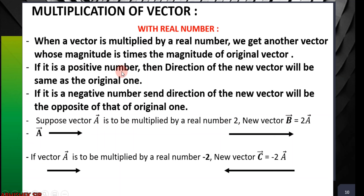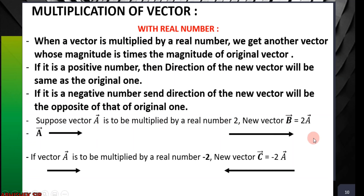If the real number is positive, the direction of the new vector will be the same as the original. If it is negative, the direction will become opposite. For example, if vector A is multiplied by 2, the new vector B will be twice the length of A in the same direction. Even 3A will be three times the length with the same direction.